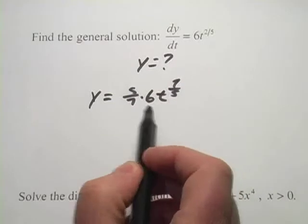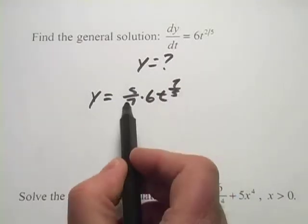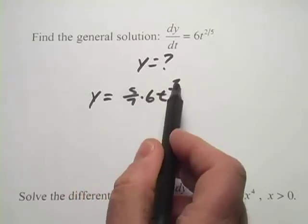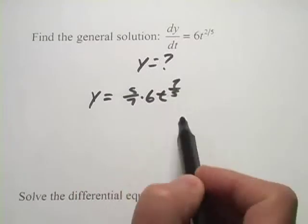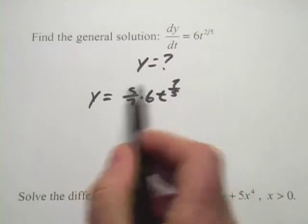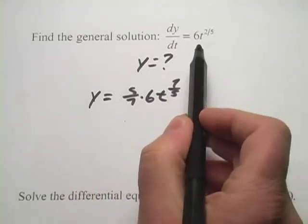So if you were going to take the derivative using the power rule here, you would multiply by the power here out here as a constant. Seven-fifths and five-sevenths, they'd cancel out. They'd disappear. Then you'd reduce this power by one, and you'd end up with 6t to the two-fifths. So this is indeed the function whose derivative is this up here.